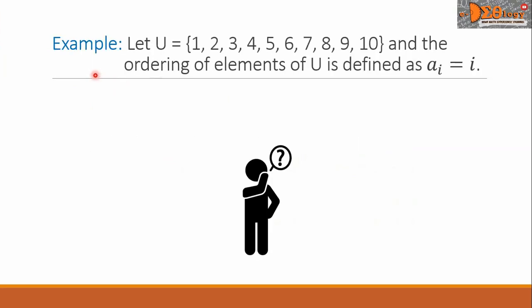Number three: to find the bit string for the complement of a set from the bit string for that set, change each 1 to 0 and each 0 to 1. Let us see this example. Let the universal set have elements 1, 2, 3, 4, 5, 6, 7, 8, 9, and 10, and the ordering of elements of U is defined as a sub i equals i.